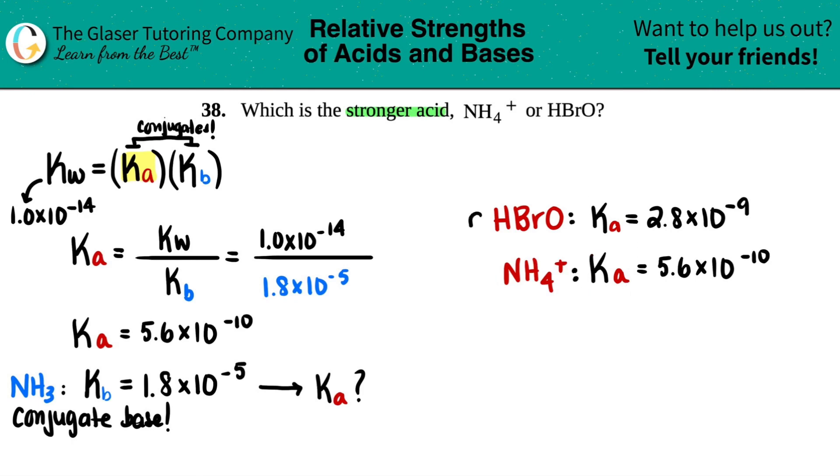Now, since we have both Kas, we can now figure out which one is stronger. And the rule is, the higher the Ka value, so the greater you have for a Ka value, the more acidic you're going to be. So increase the acidity.